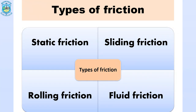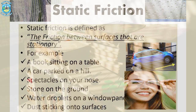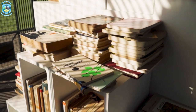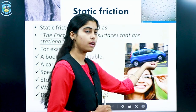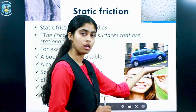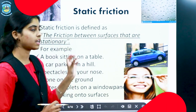There are a few types of friction. The very first is static friction, then sliding friction, fluid friction, and rolling friction. Static friction is friction between surfaces that are stationary — for example, a book kept on a table, or a car parked on a hill. When a car is parked on a hill, there is no relative motion between the wheels and the hill. That is why static friction is present.